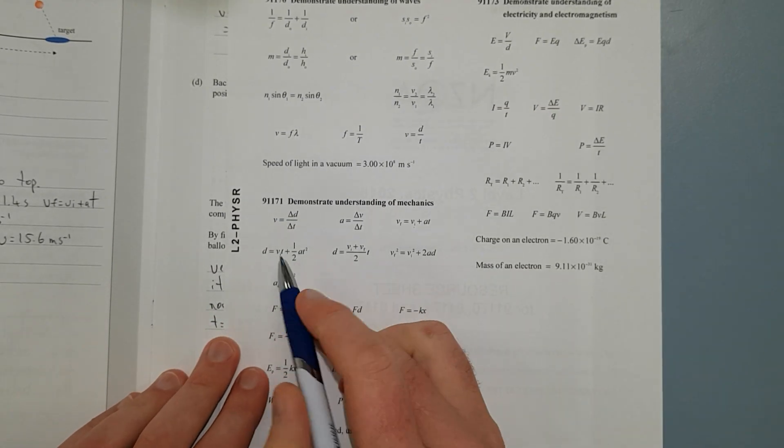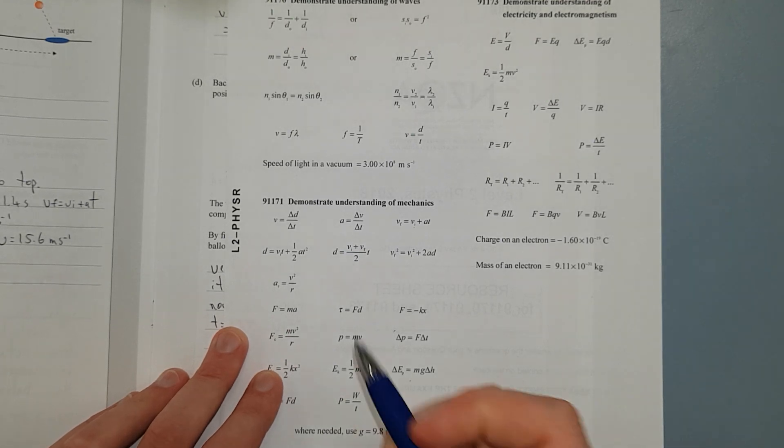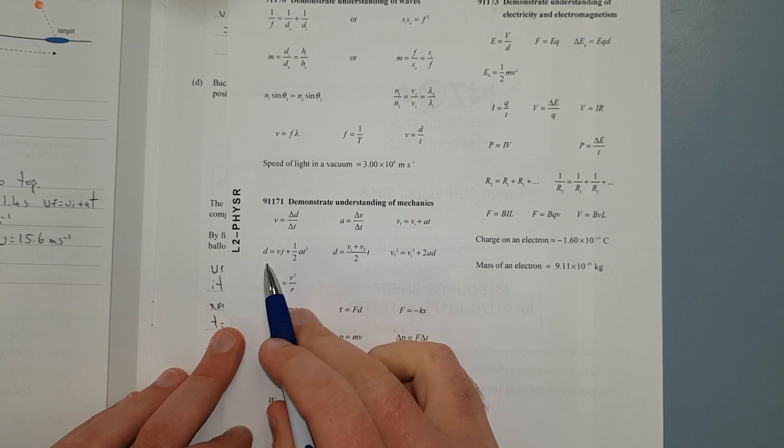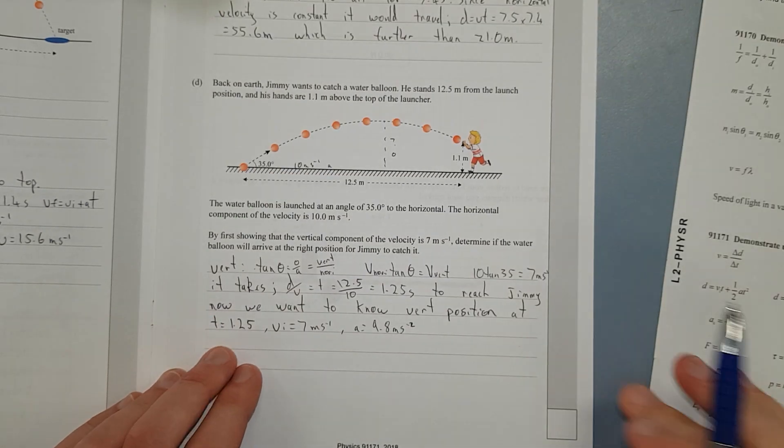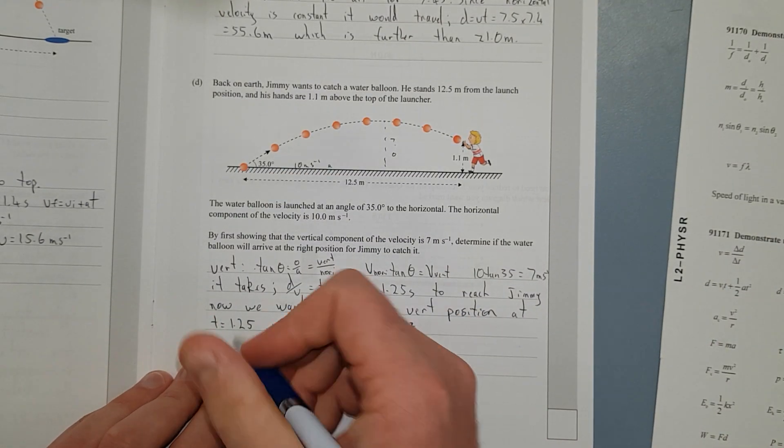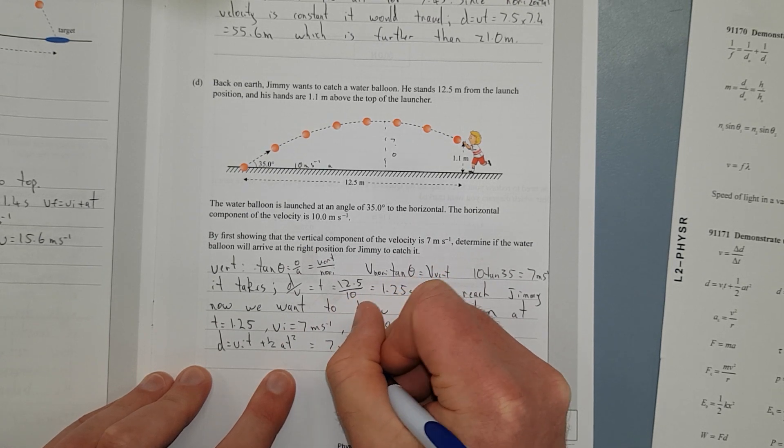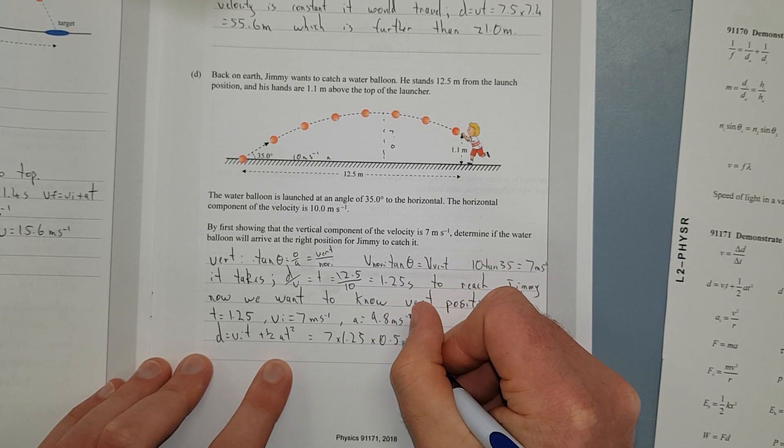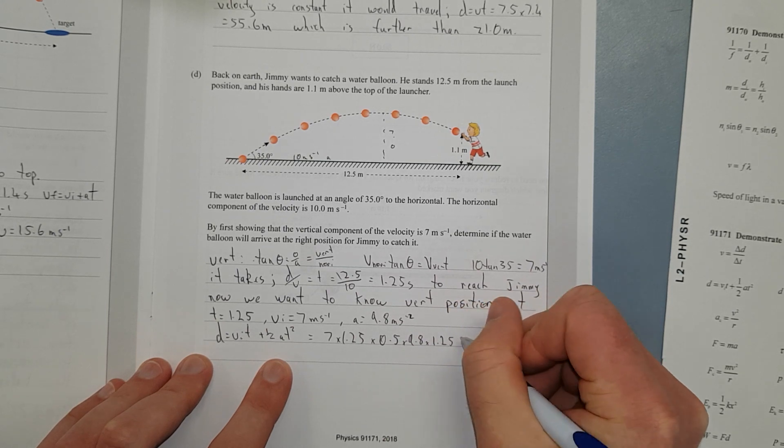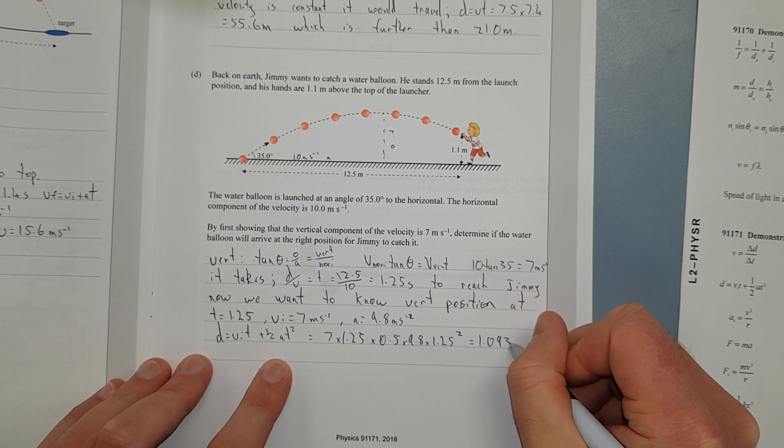So this is going to tell us, d equals vit plus half at squared, which is going to give us 7 times 1.25, plus 0.5 times 9.8 times 1.25 squared, and that is going to give us 1.0937 meters.